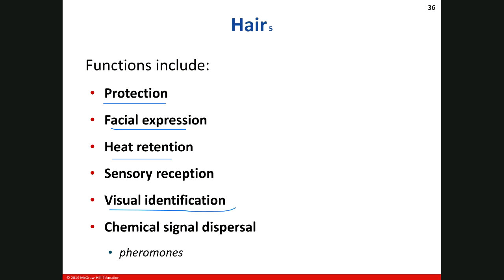Visual identification — one of the ways we can tell somebody's age is gray or white hair. It happens early in some people — it's genetic. Chemical signal dispersal — pheromones. Usually around puberty you start to grow hair in your armpits and groin area, and certain glands get activated. Those glands create secretions that go out onto the pubic hair and mainly the axilla — the armpit region — getting spread and giving that person a certain scent. Sometimes that scent might be delightful; sometimes it's offensive. We refer to that as pheromones.